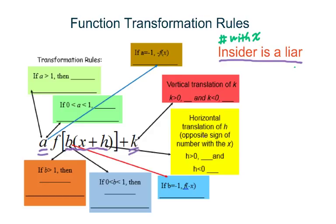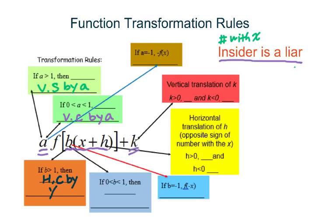Outsiders always act as they are. So when A is greater than 1, it means vertically stretched by a factor of A. If A is between 0 and 1, it will be vertically compressed by a factor of A. For B, since B is an insider, it will be a liar — in other words, when B is greater than 1, we do horizontally compressed by a factor of 1 over B.